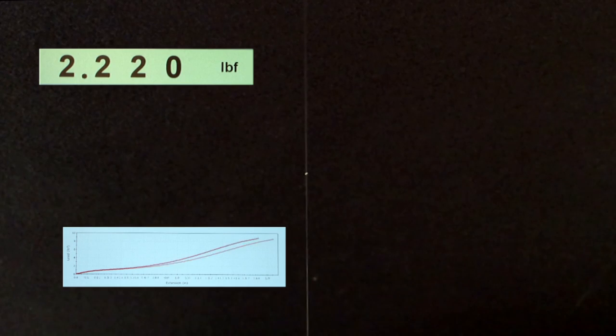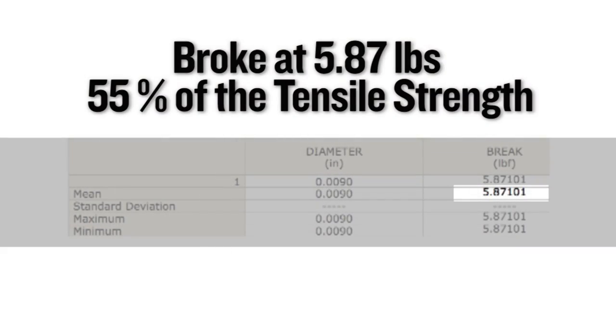In this single knot test, the overhand knot, or wind knot, broke at 5.87 pounds, which equates to 55% of the tensile strength.